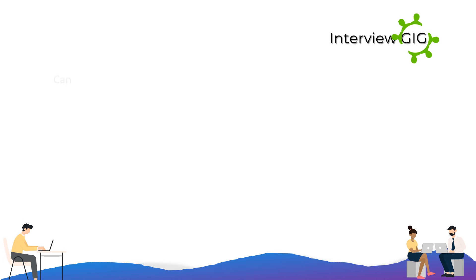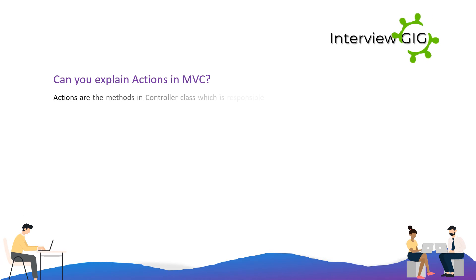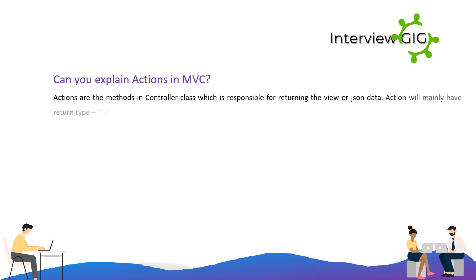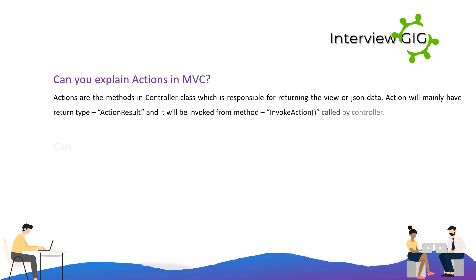Can you explain actions in MVC? Actions are the methods in a controller class which are responsible for returning the view or JSON data. An action will mainly have return type action result, and it will be invoked from the invoke action method called by the controller.